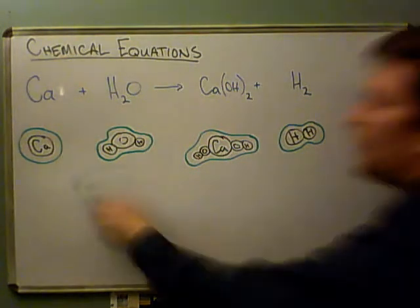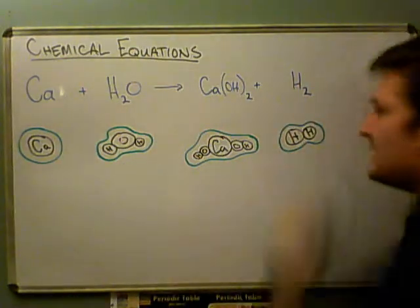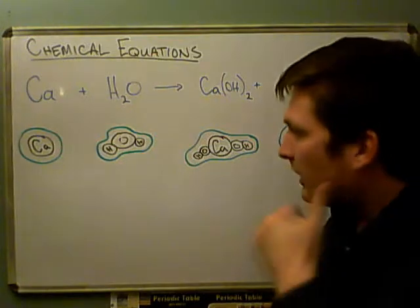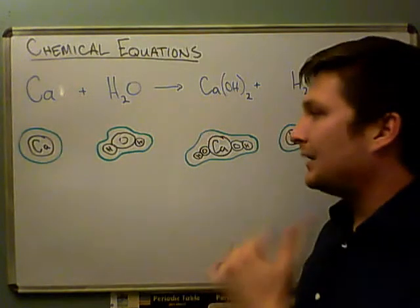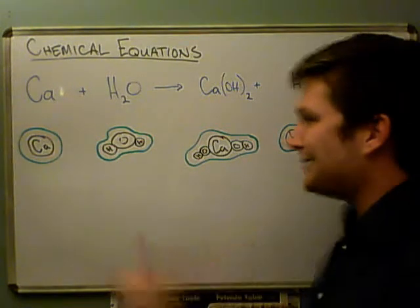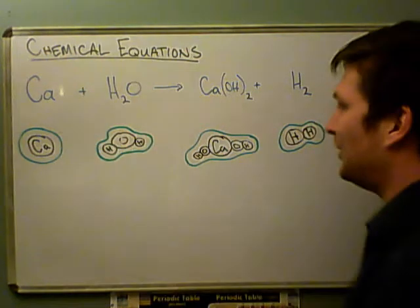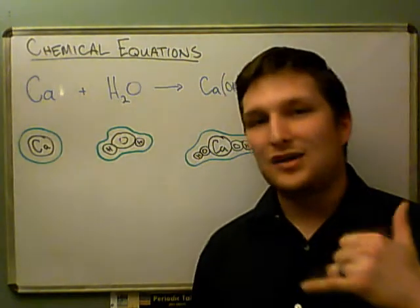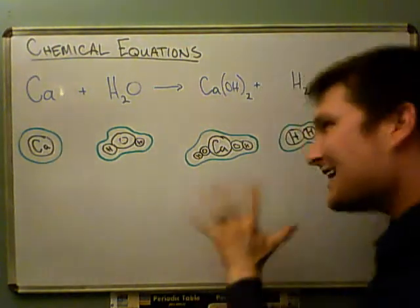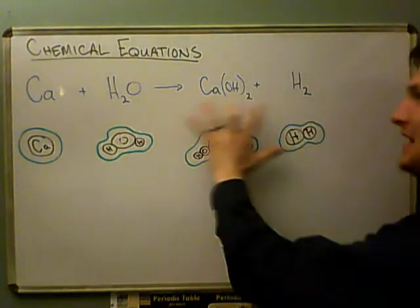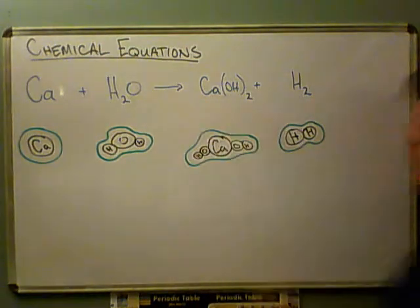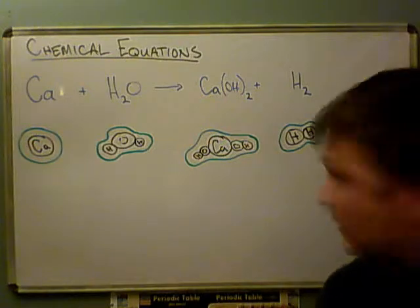So now we have our recipe. We know what ingredients we need. So if we're going to go to the store, we call up, hey honey, what do I need to pick up? I'm going to need some calcium atoms, some H₂O, calcium hydroxide, and hydrogen. How much should I get? I don't know yet. Just get a lot of it. So that's kind of the point that we're at now. But now we need to balance all of this. And so let's see what we need to do.